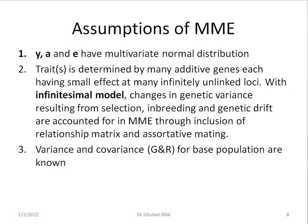Now we will go to some assumptions of MME. We assume that Y, A observations, breeding values and errors have multivariate normal distribution. Traits are determined by many additive genes with small effects located at many infinitely unlinked loci. This is called infinitesimal model. Changes in genetic variance resulting from selection, breeding and genetic drift are accounted for in MME through inclusion of relationship matrix and assortative mating. Variance covariance for base population are assumed to be known.